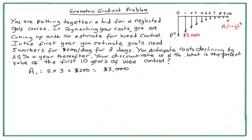We know A1 equals $3,000. Let's identify what else we have — I'll circle them in the question. We've got n equals 10 years, and g equals negative 0.25, since the cost declines 25% per year. Our discount rate i equals 6%, or 0.06.